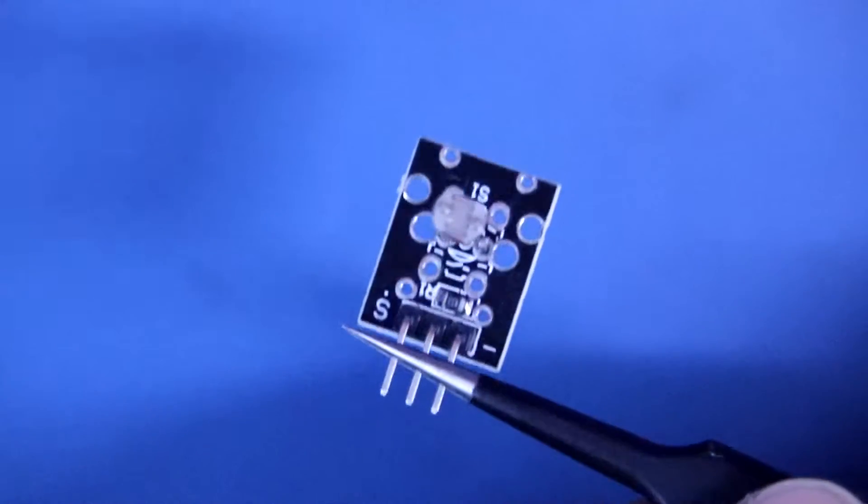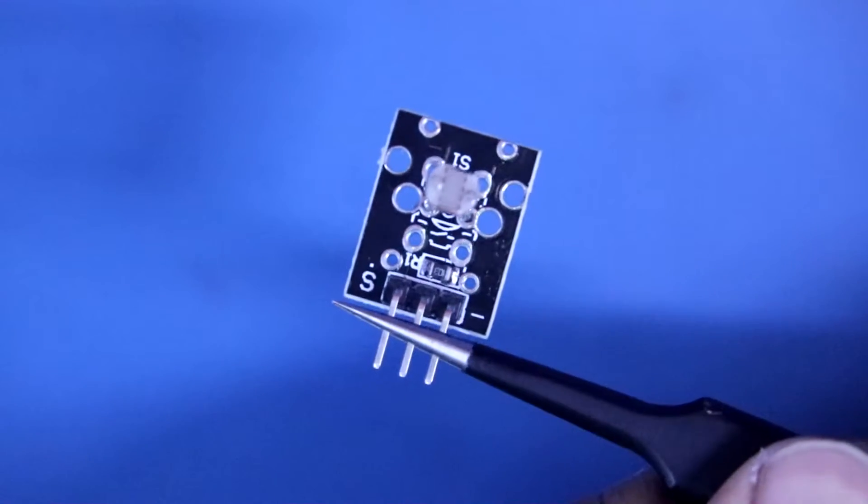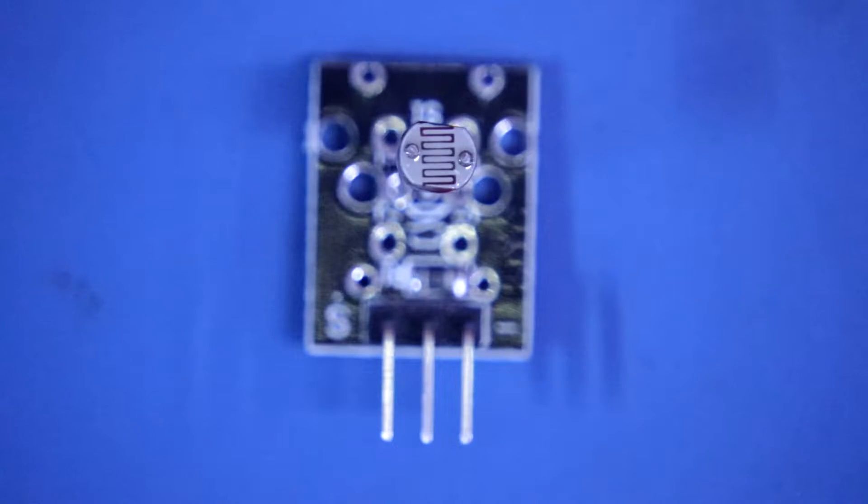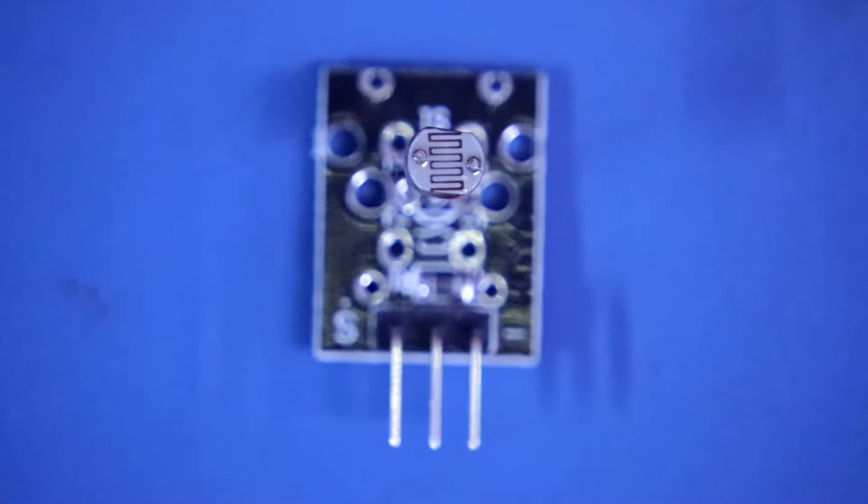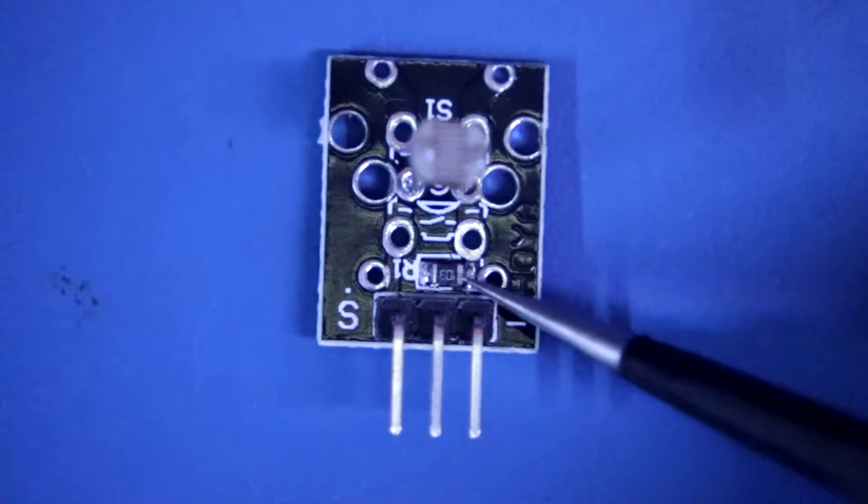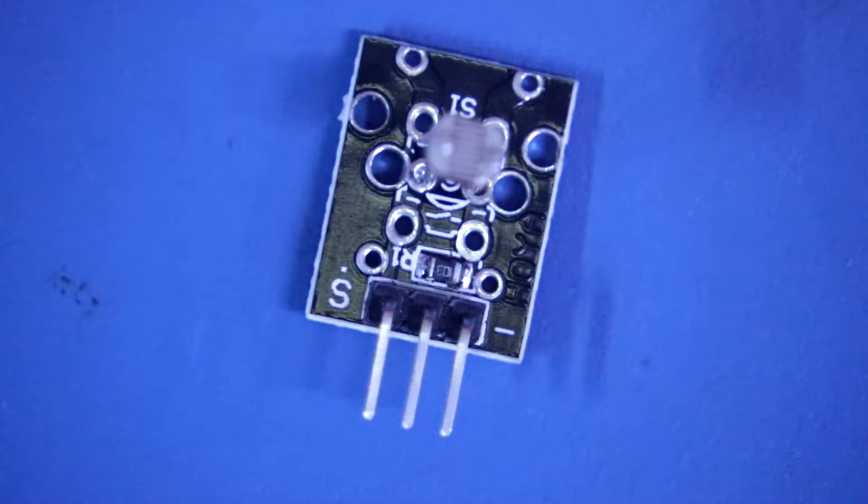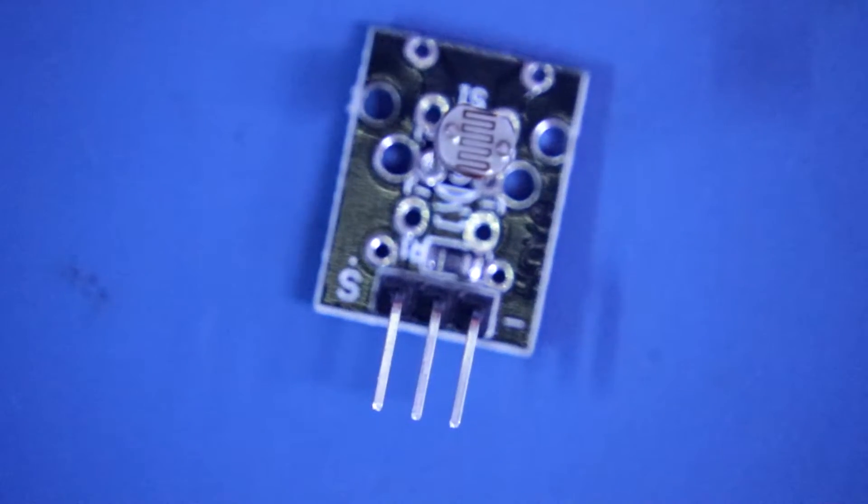Photo resistor sensor KY018. On this module board it has an LDR and a 10 kilo ohms resistor. Now let's see the circuit diagram of this module.